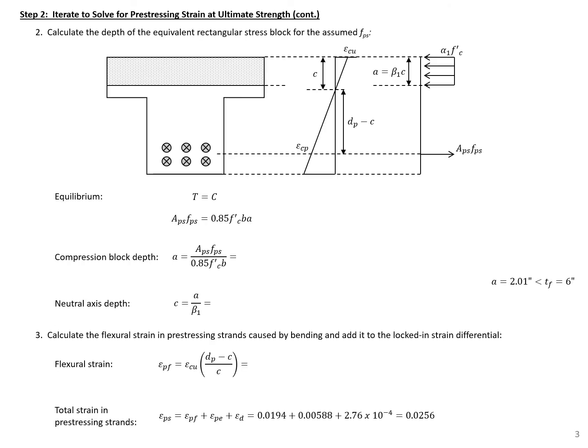Our next step is to calculate the depth of the equivalent rectangular stress block based on our assumed F sub PS. We're going to assume here that our compression block falls in the top flange of our section. We'll need to check that after we calculate our compression block depth, A, and use starting from equilibrium.